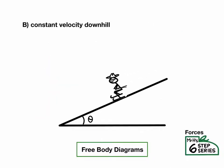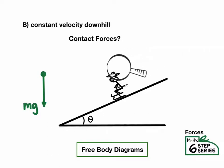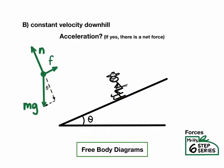But what about the case of going downhill with a constant velocity? We'll still have the invisible force of gravity, and we'll still have the normal force. But the contact from the ground is also going to give us a frictional force uphill. So in this case, there's no acceleration, so the uphill and the downhill forces need to cancel out.